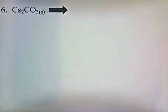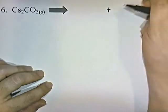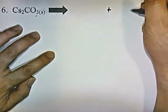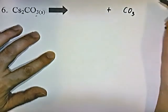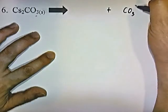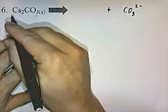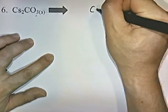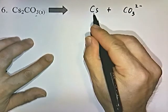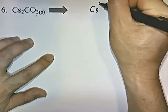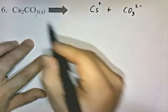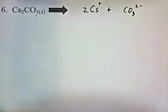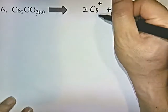Cs2CO3 is solved almost the same way. CO3 is carbonate and carbonate has a negative 2 charge. Cs is cesium — cesium is a group 1A element, so it's going to have a plus 1 charge. We swing the 2 in front, and that's how it dissociates when you put it into water.